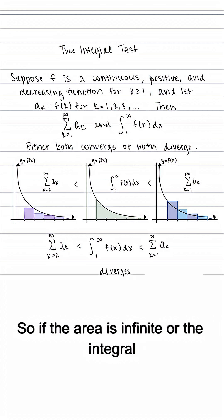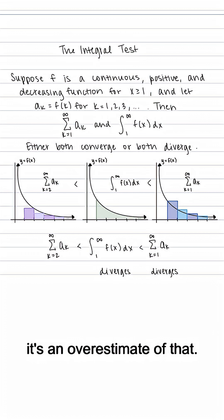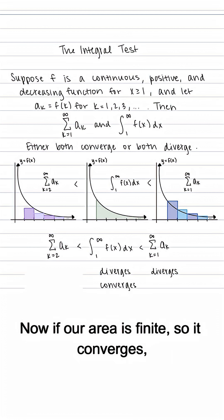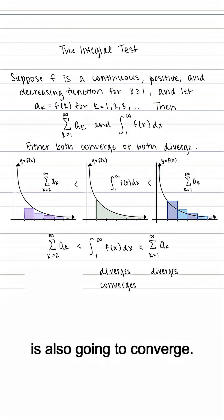So if the area is infinite or the integral diverges, this tells us that our actual series is also going to diverge because it's an overestimate. Now if our area is finite so it converges, that tells us that our underestimate is also going to converge.